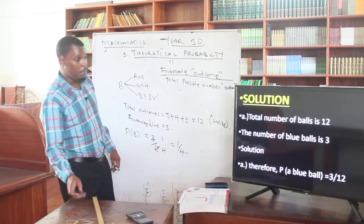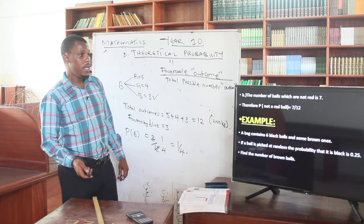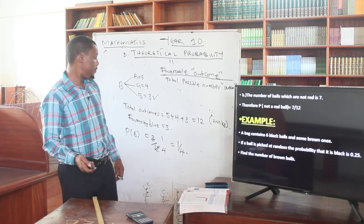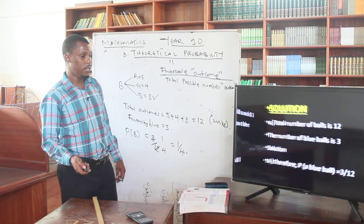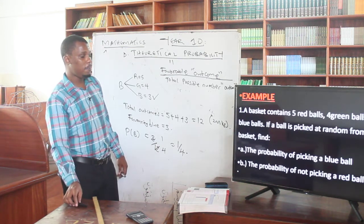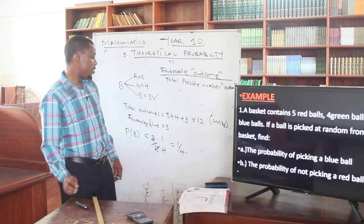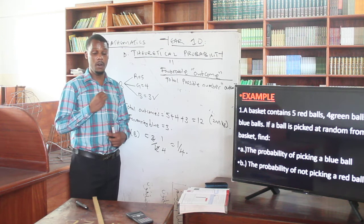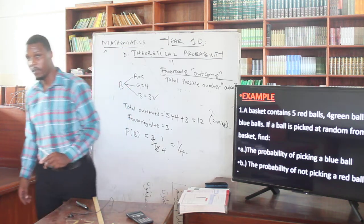When we come to part B, we are told to find the probability of not picking a red ball. So what is the probability of not picking a red ball? We'll see that in our next part of the video.